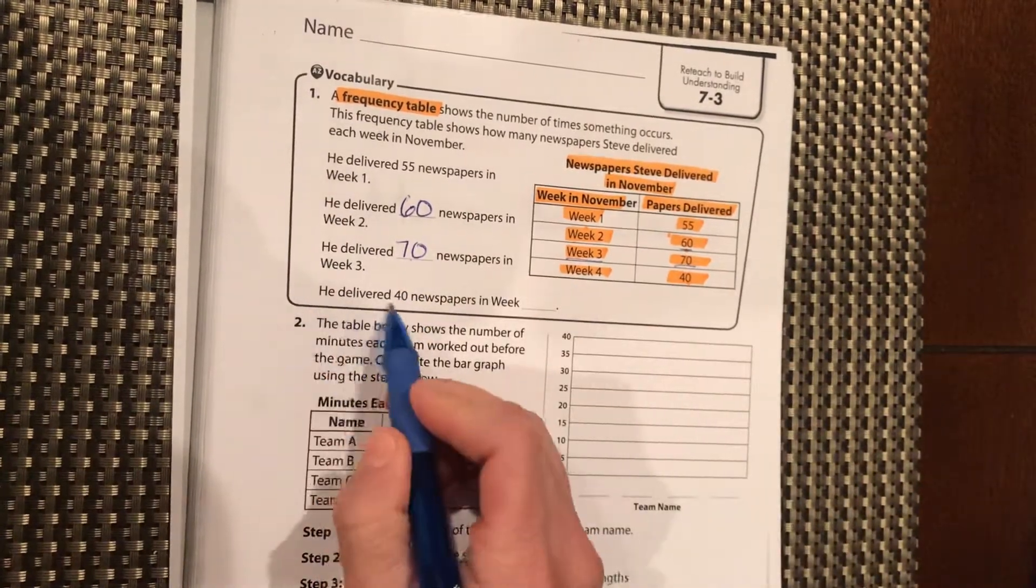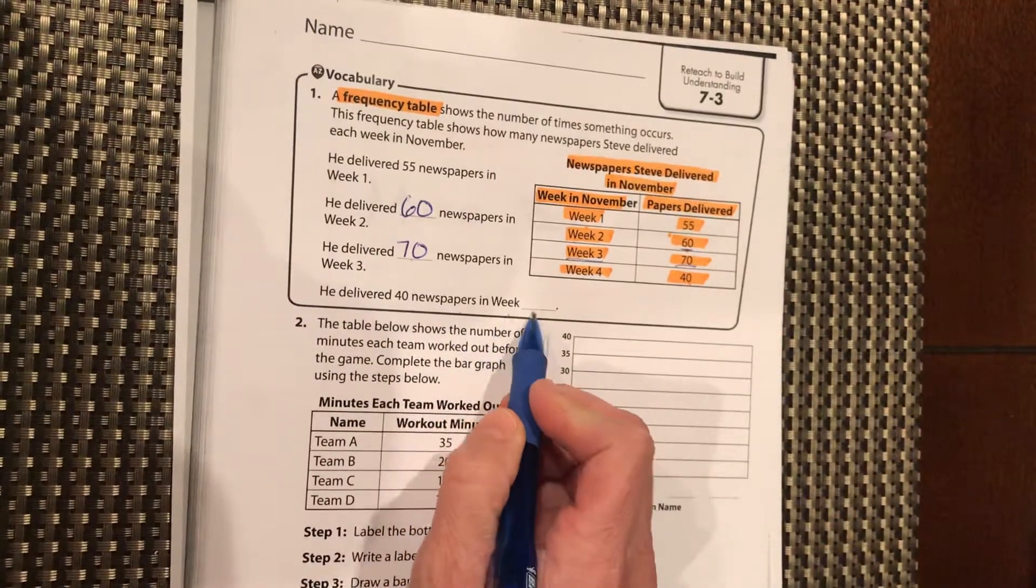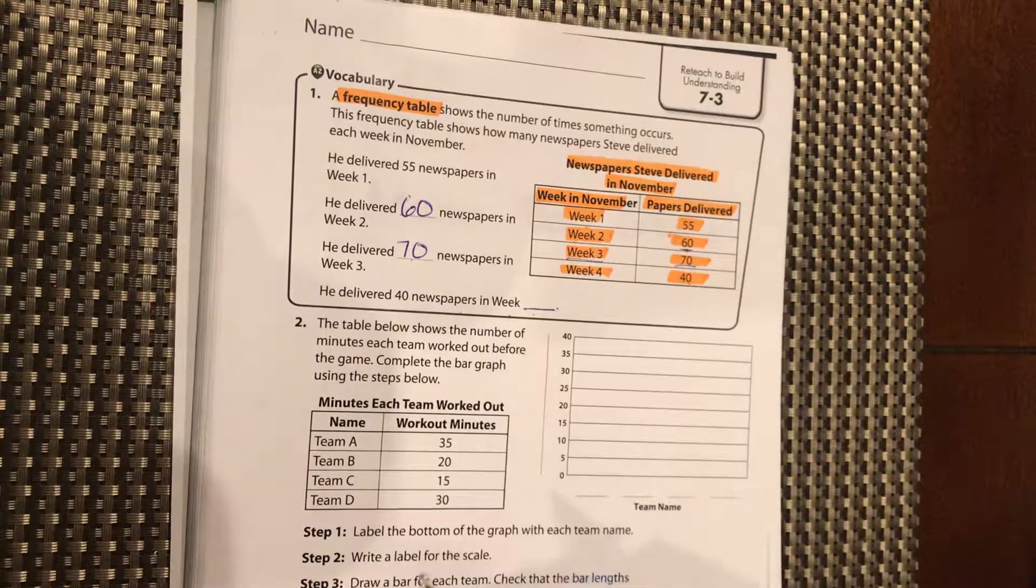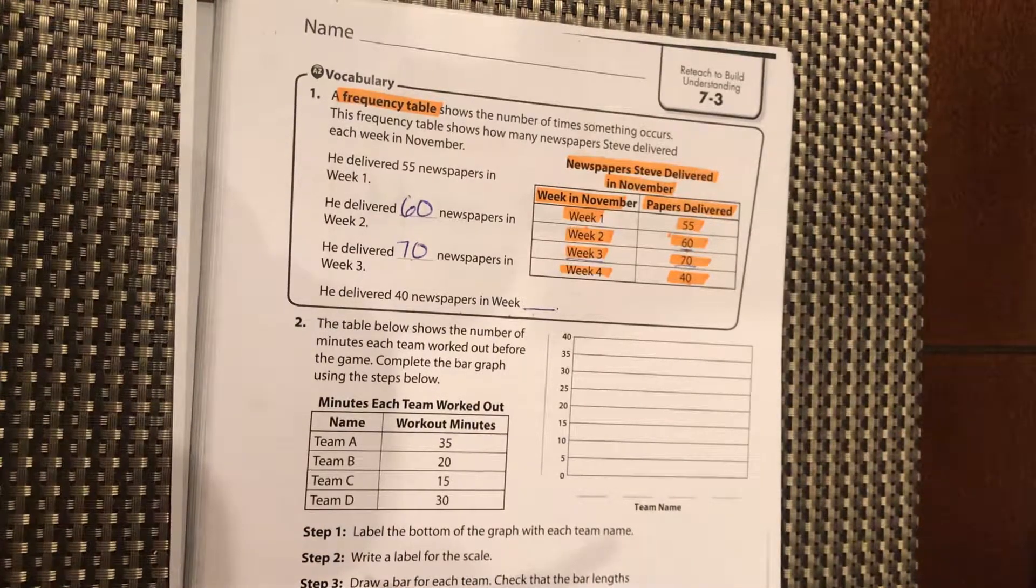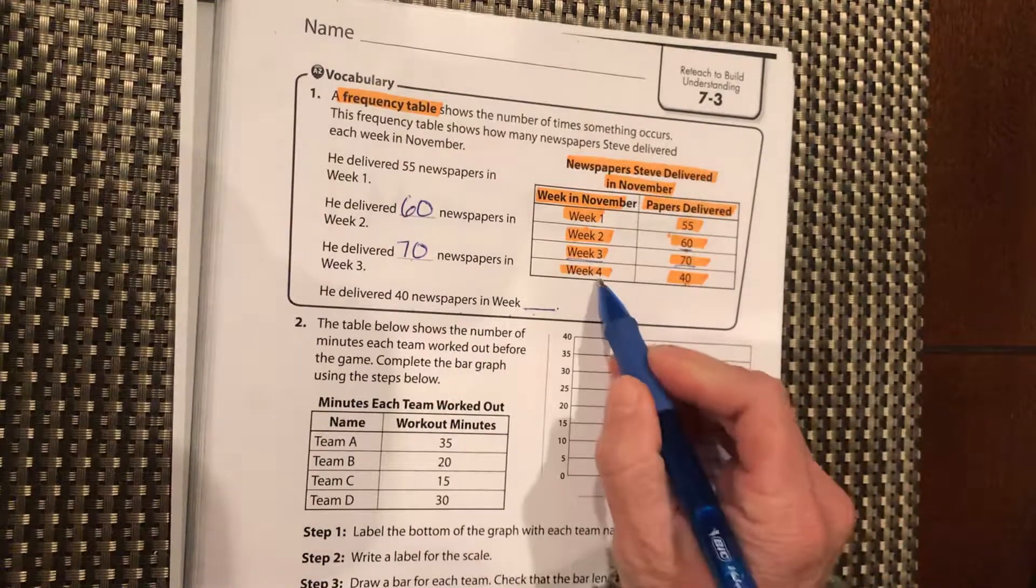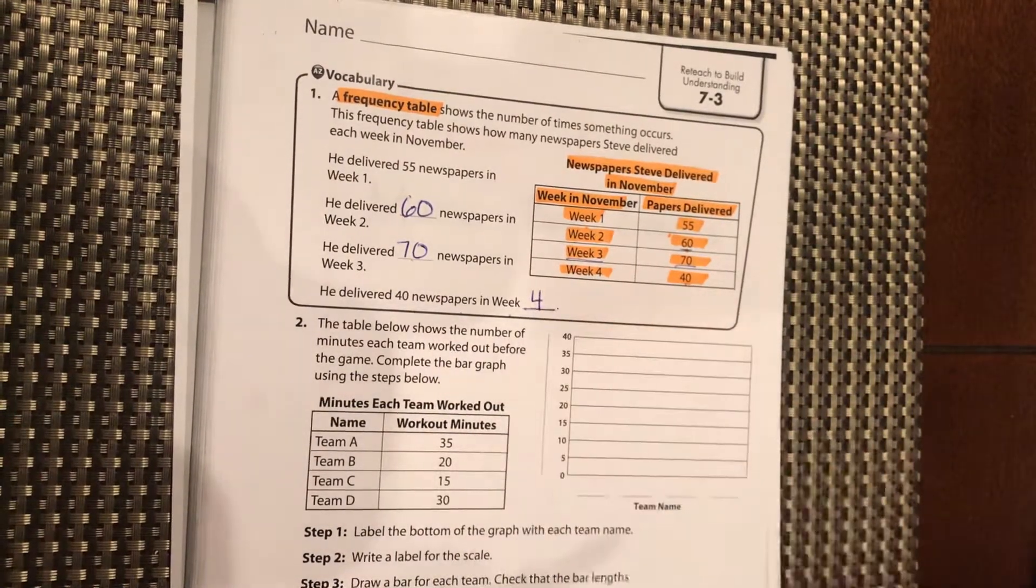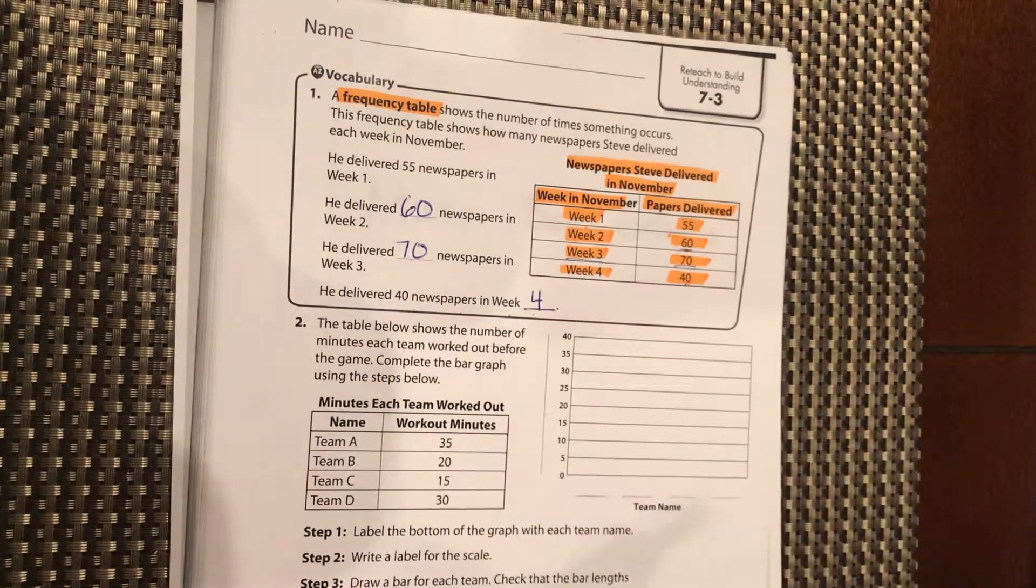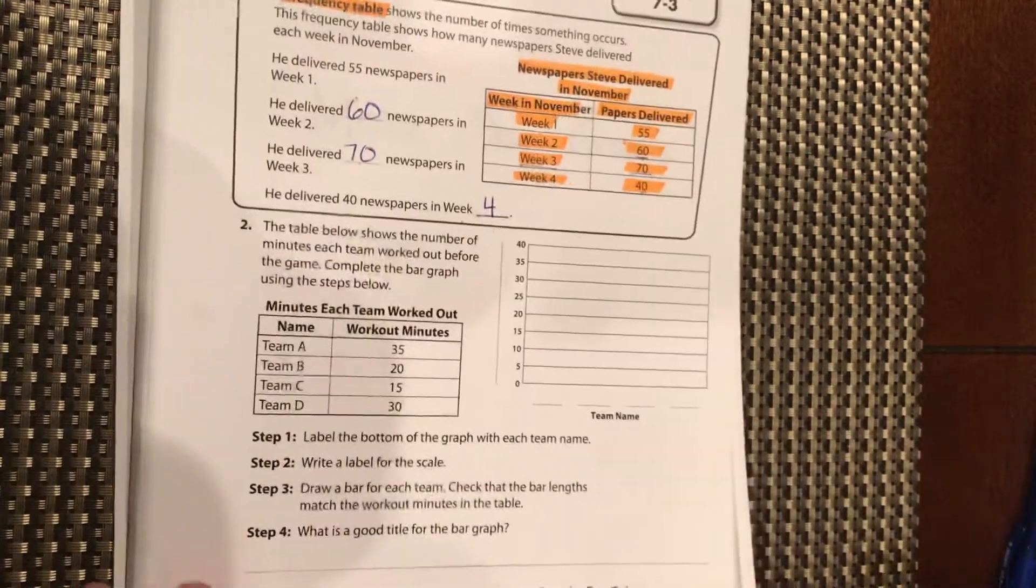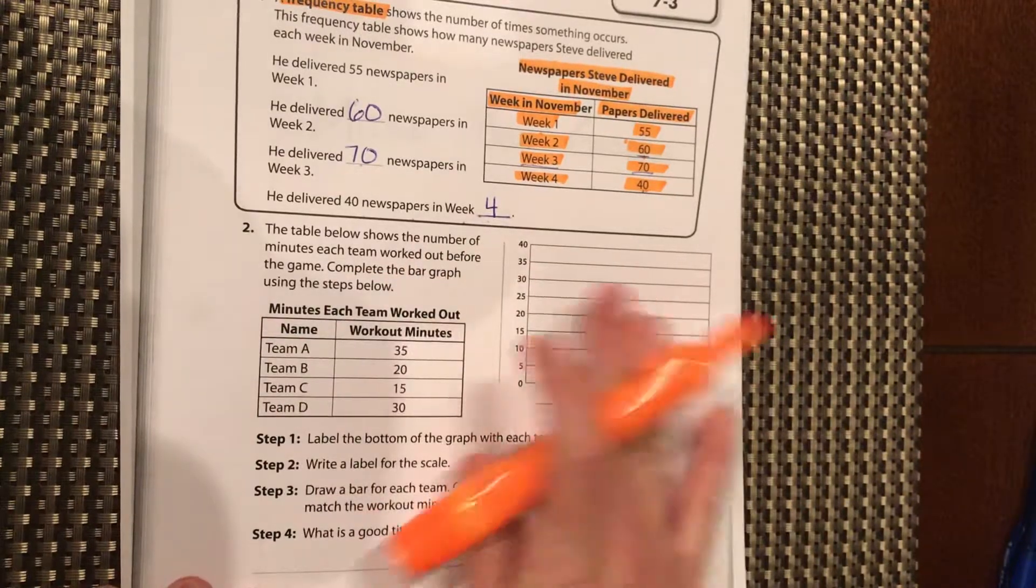And then he delivered 40 newspapers in which week? Week number what? So go over here, look for 40, and then go over and see which week it is. You should find it right here. It's week four. So that's a frequency table. Now, totally different table here.